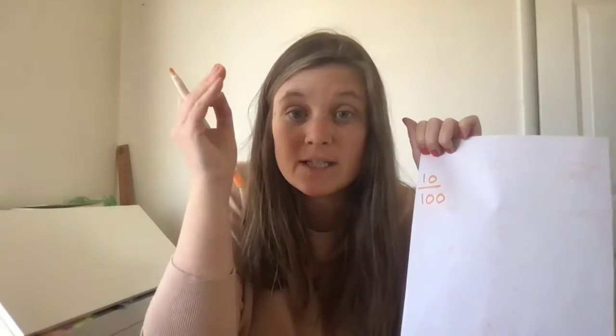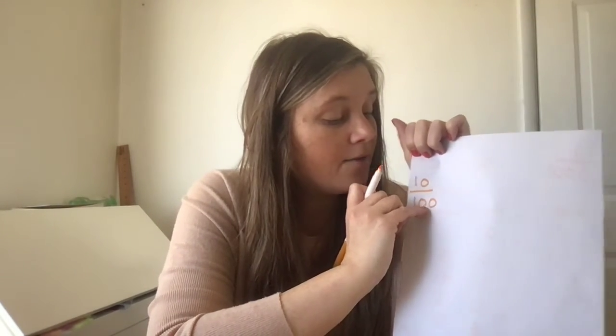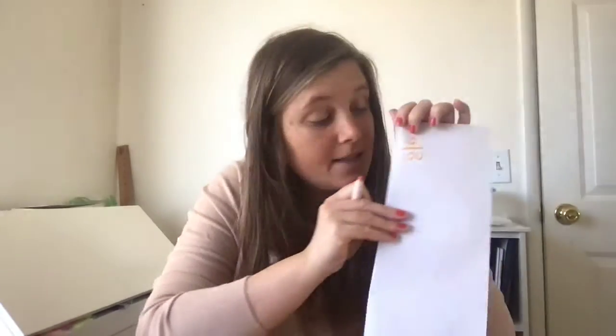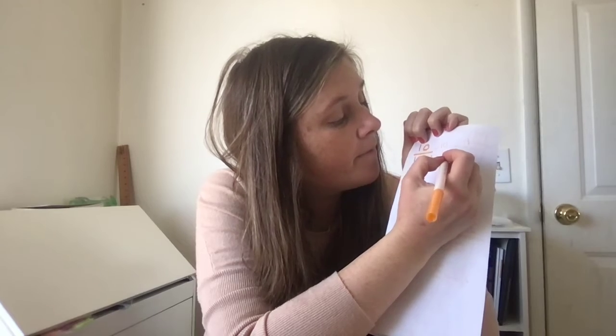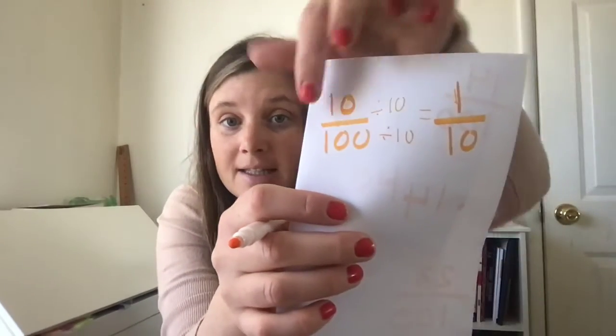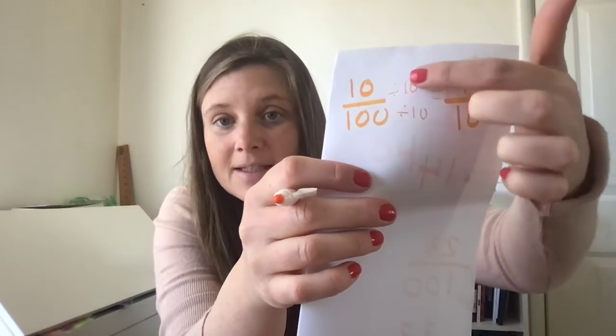Because we just need to divide them by the same number. What if we divide 10 by 10 and divide 100 by 10? So if we have 10 over 100, let's divide them by the same thing. 10 divided by 10 equals 1. What's 100 divided by 10? 10, right. So is 10 one-hundredths and one-tenth equivalent fractions? Yeah, because we divided them by the same thing.